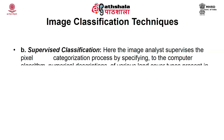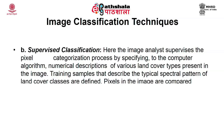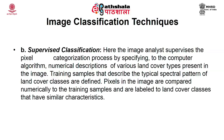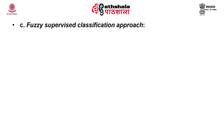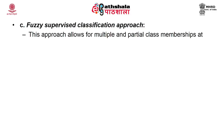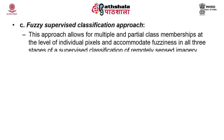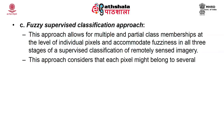Unsupervised classification is an automated classification method that creates a thematic raster layer from a remotely sensed image by letting the software identify statistical patterns in the data without using any ground truth data. In supervised classification, the analyst supervises the pixel categorization process by specifying to the computer algorithm numerical descriptions of various land cover types present in the image. Training samples that describe typical spectral patterns of land cover classes are defined, and pixels in the image are then compared numerically to the training samples and labeled to land cover classes that have similar characteristics.